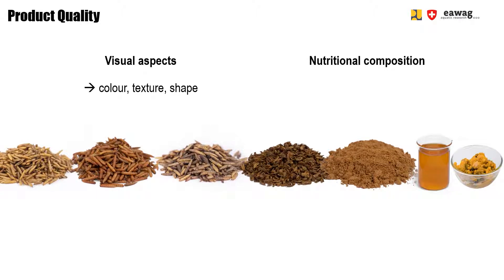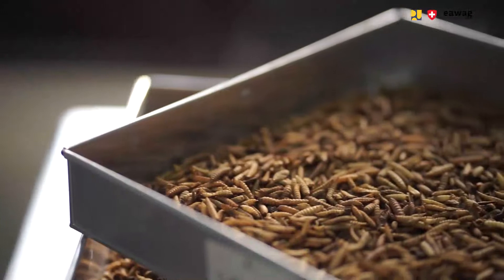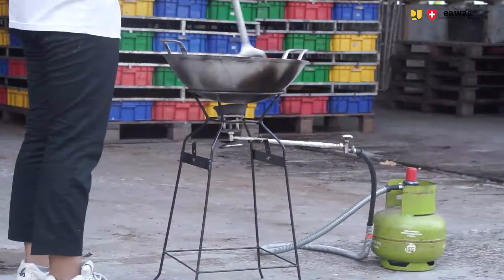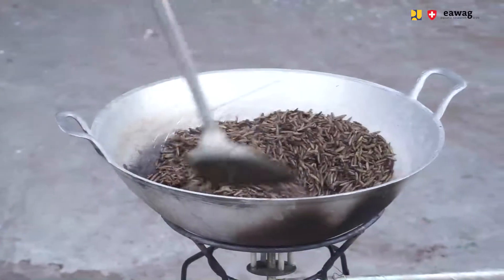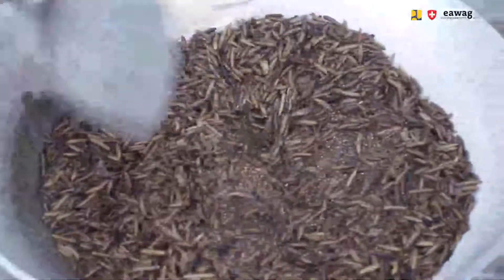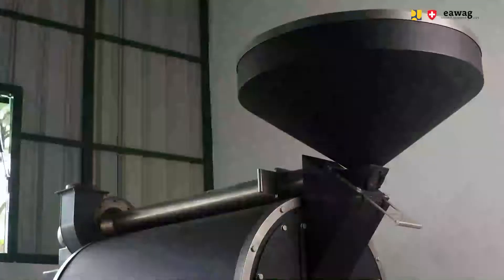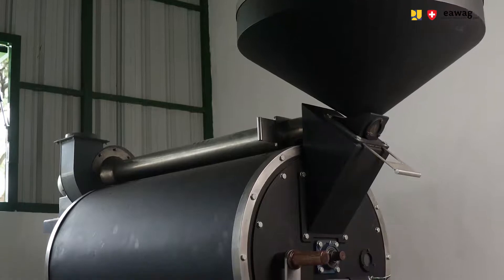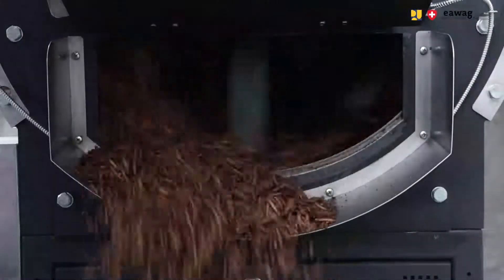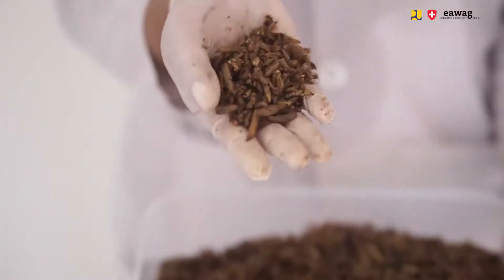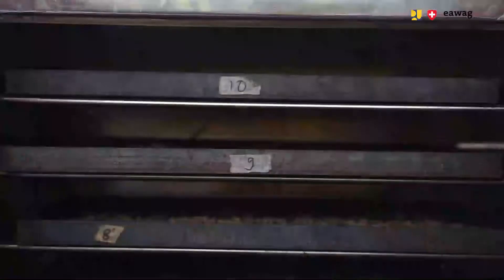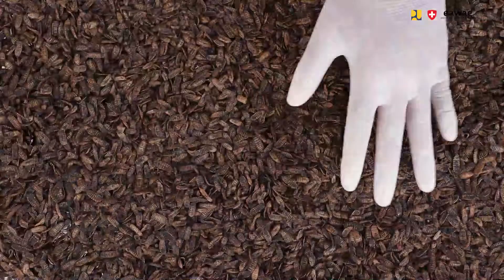With nutritional composition, we mean the protein, fat, fiber, ash and moisture content of the end product. One module will be about microwave drying — the output are bright, crispy and puffed BSF larvae. Then there is a module on roasting BSF larvae with a very simple and small scale setup, producing crispy and puffed larvae, but with more color changes compared to microwave drying. We will also show the roasting process at a bigger scale using a coffee roasting machine, producing crispy and puffed larvae with typically roasting-induced darker colors. There is one more module on drying BSF larvae using an aesthetic oven — a more passive but slow drying method — producing light and hard larvae with a dark color.